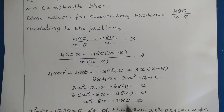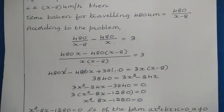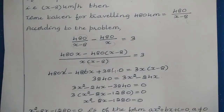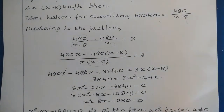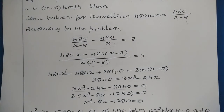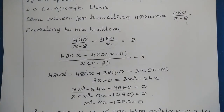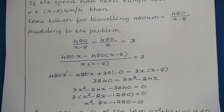This equation is in the form ax² + bx + c = 0, where a = 1, which is not equal to 0, confirming it is a valid quadratic equation. This is our final answer. If you like this video, please like and subscribe, and click the bell icon to get regular notifications. Thanks for watching.